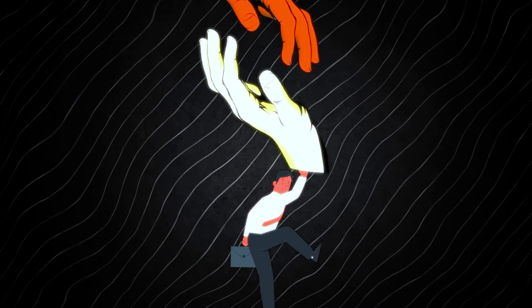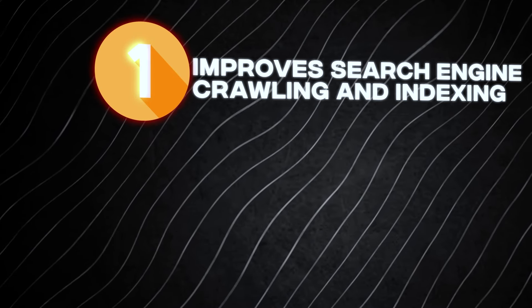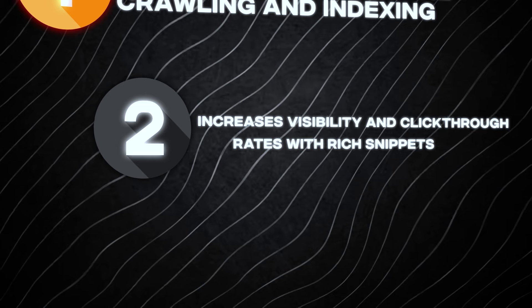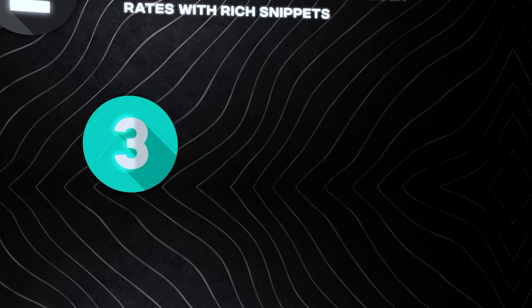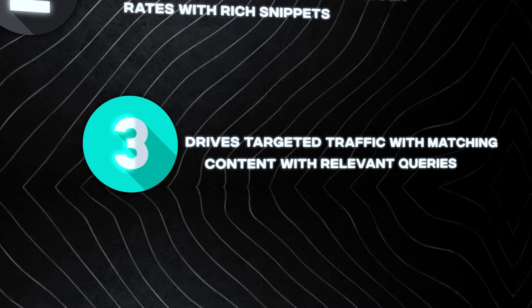You may be asking yourself, how does this help me improve my SEO strategy and rankings? Schema markup provides an advantage in three critical areas vital for successful search engine optimization. Number one, improve search engine crawling and indexing. Number two, increase visibility and click-through rates with rich snippets. Number three, drive targeted traffic by matching content with relevant queries.